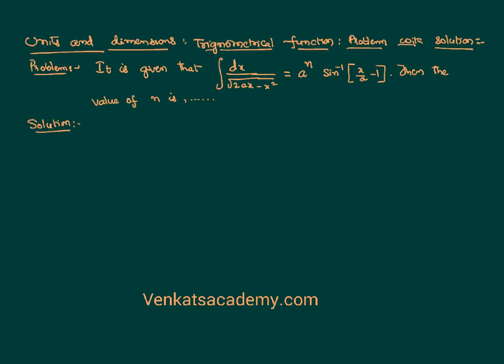We are going to solve a problem where we need to find the dimensions of a physical quantity where trigonometric function is involved. The problem is given like this: integral of dx by 2ax minus x square equal to a power n, sin inverse of x by a minus 1. Then what is the value of n? That is the problem we need to solve.